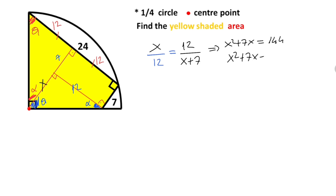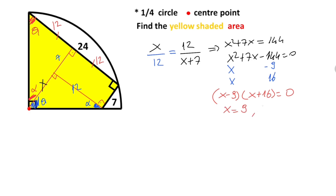So after cross multiplication, x squared plus 7x equals 144. So x squared plus 7x minus 144 equals zero. Therefore, x minus 9 times x plus 16 equals zero. Therefore x equals 9 or x equals negative 16. We know that length cannot be negative, so that root is cancelled. So x equals 9 units.